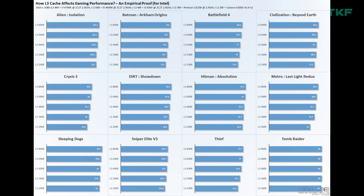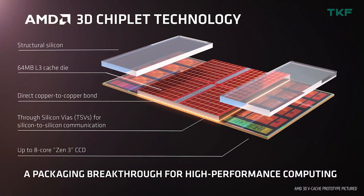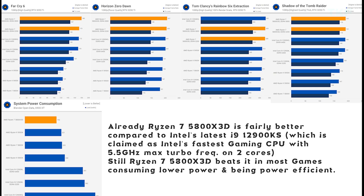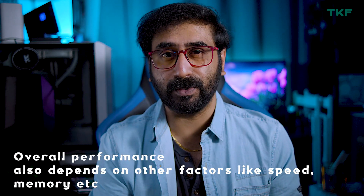AMD's 3D VCache design stacks additional L3 cache memory directly on the processor, which significantly reduces latency. Even though cache memory is not always a major deciding factor, AMD's implementation and architectural differences are useful for certain applications. In benchmarks we can notice a marginal difference and compare scores, but in common everyday usage there may be no noticeable difference.